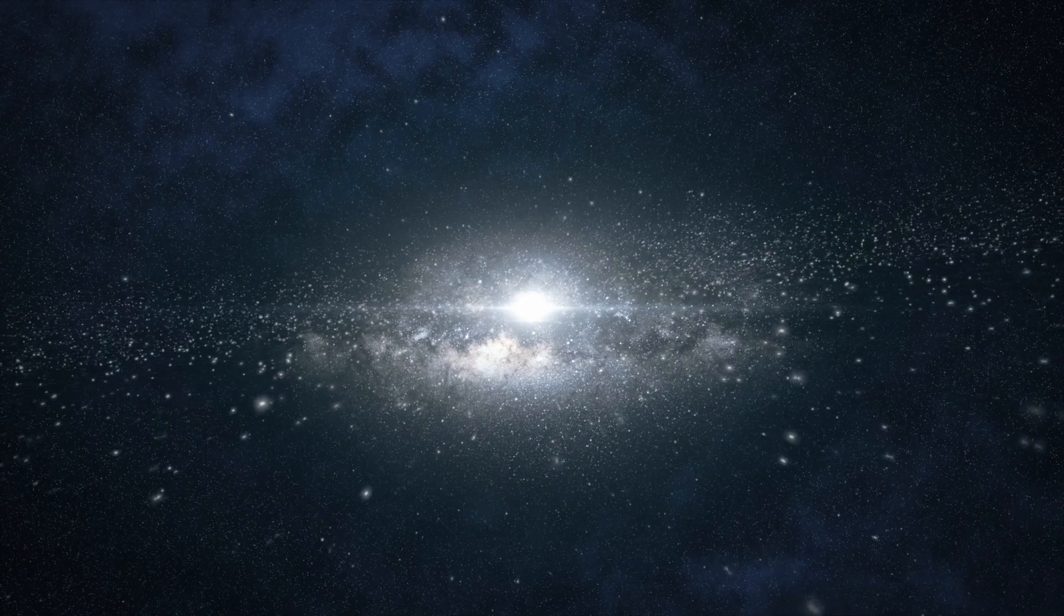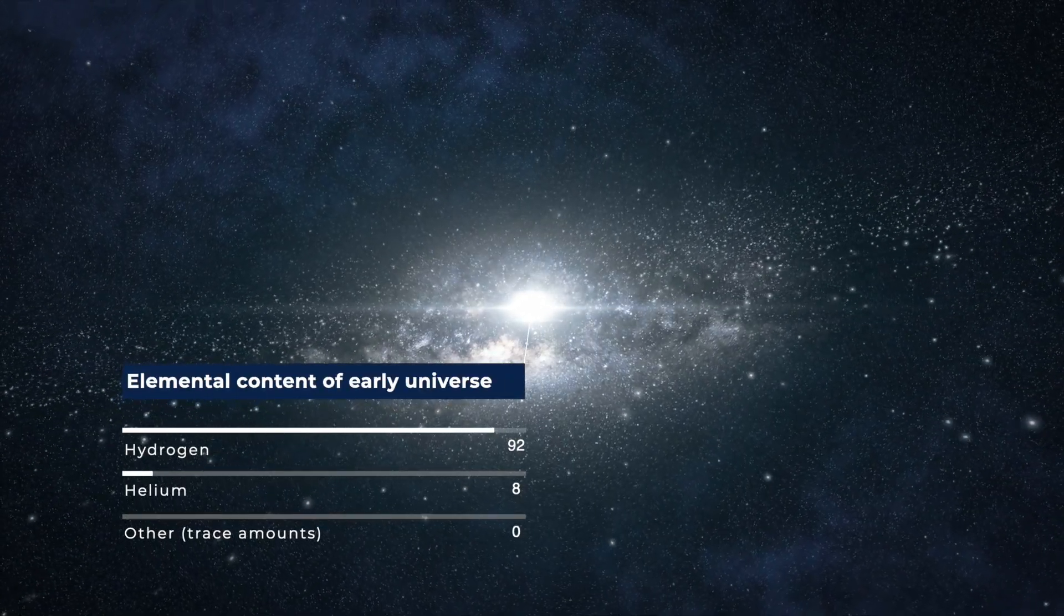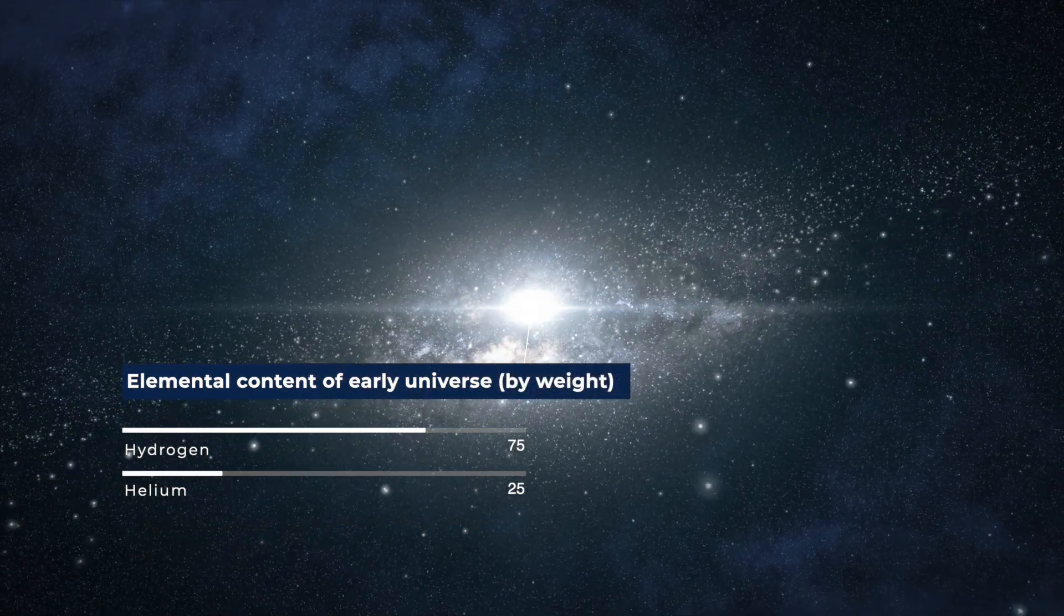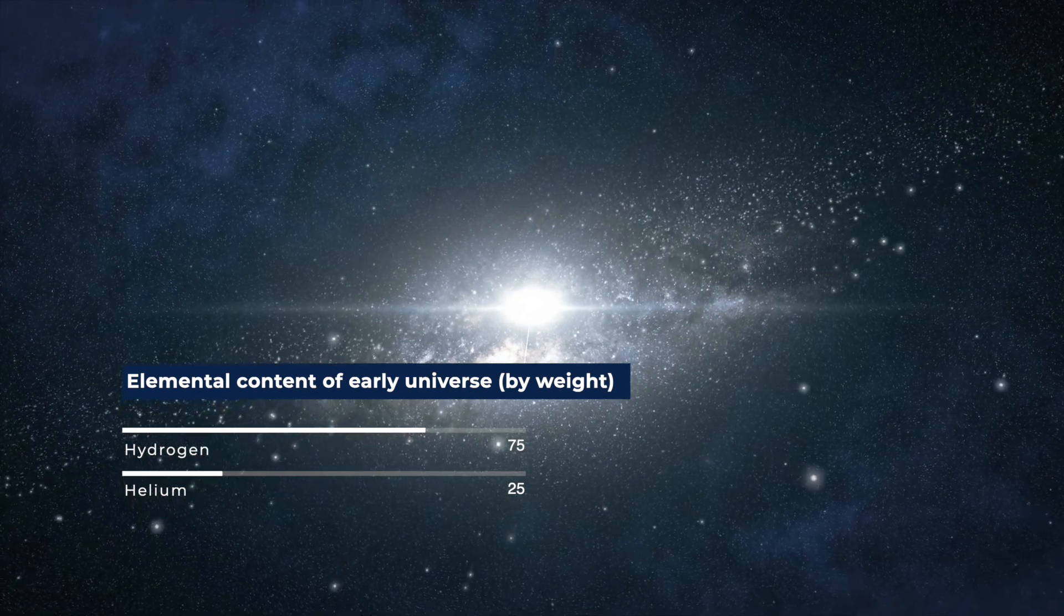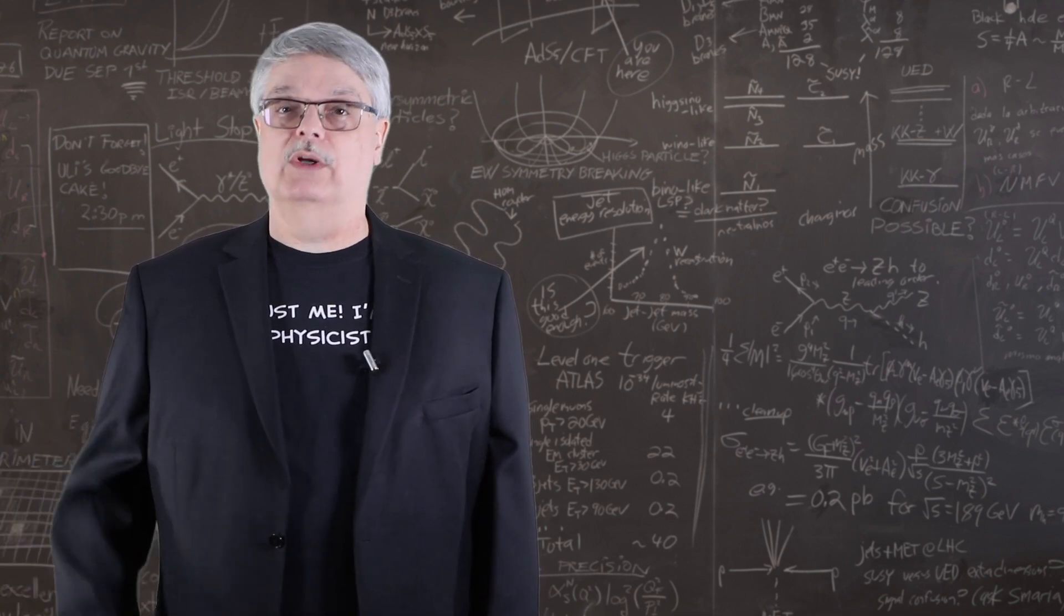Immediately after the Big Bang, essentially only hydrogen and helium were present. If you counted atoms, the universe was about 92% hydrogen and 8% helium. If instead you weighed the substances, hydrogen made up about 75% of the matter of the universe, and 25% was helium. This is because helium atoms weigh about four times as much as hydrogen ones.